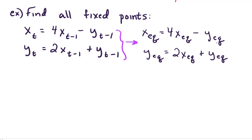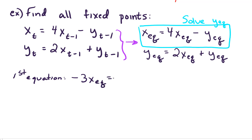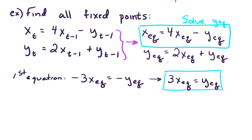Let's work with the top equation and simplify — we'll solve it for y_eq. You have lots of ways for solving linear systems; those who have taken linear algebra can think of some additional techniques. Working with our first equation, if we move 4x_eq to the other side, we get negative 3x_eq equals negative y_eq, which implies that 3x_eq equals y_eq. We'll hang on to that.